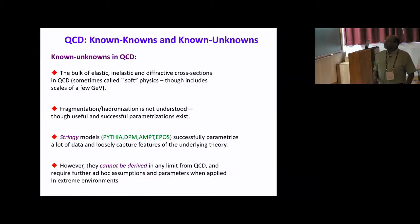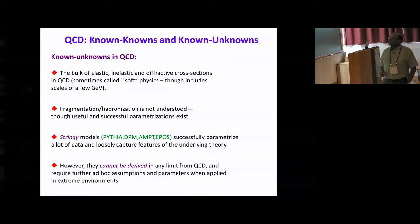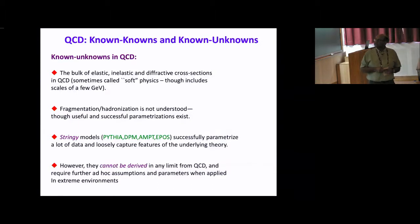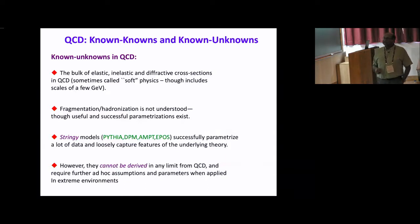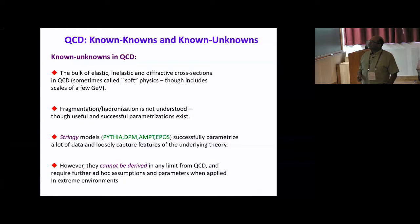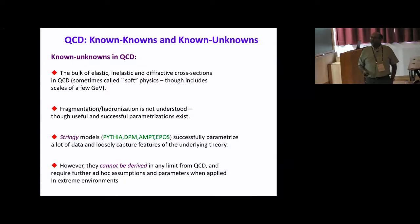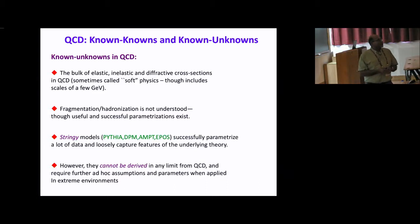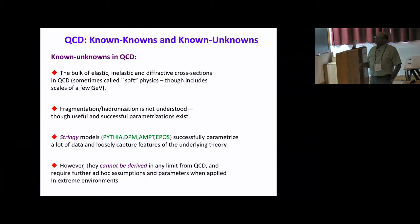What we don't know very well in QCD is how to describe from first principles the bulk of elastic, inelastic, and diffractive cross sections — sometimes euphemistically called soft physics, even though it can include scales of a few GeV. We also don't understand how partons fragment and hadronize. We know how to parameterize these in black boxes, but we don't really know how to calculate that from the theory.